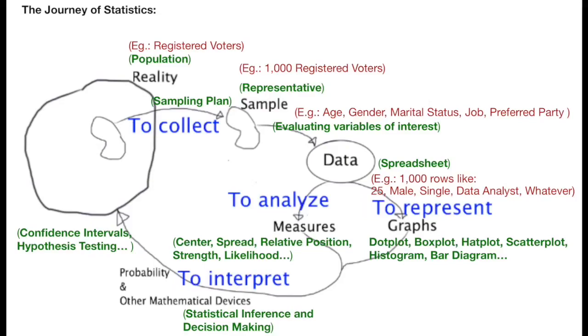Once we have this data, we analyze and represent it by means of measures and graphs. I want to stress here that while graphs look more like oriented towards representing, they are also crucial for analyzing. Patterns and relationships are usually not visible looking at the numbers but are clear when looking at the graphs.